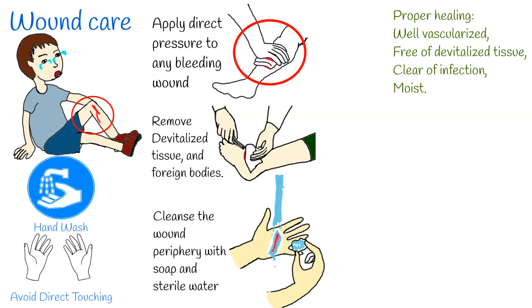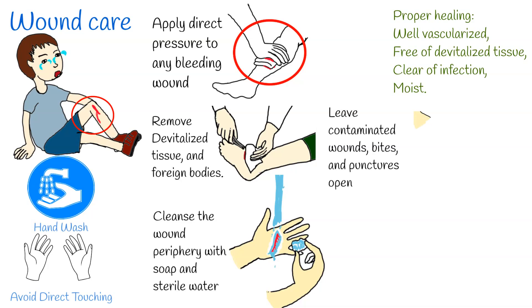Step 5: Wash and irrigate wounds with saline solution using a large bore needle and syringe. If unavailable, bottled water is acceptable. Step 6: Leave contaminated wounds, bites, and punctures open.